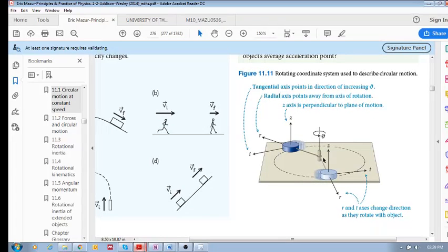Now, this is important. The R and T axes change direction as they rotate with the object. So it's not a fixed set of axes. But as you can see, T changes at every single point, T changes and R changes.